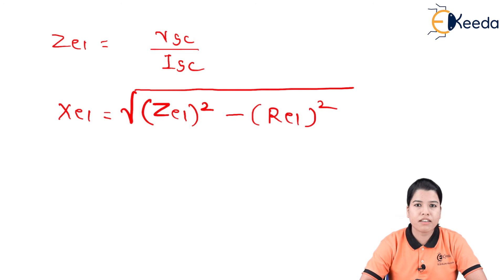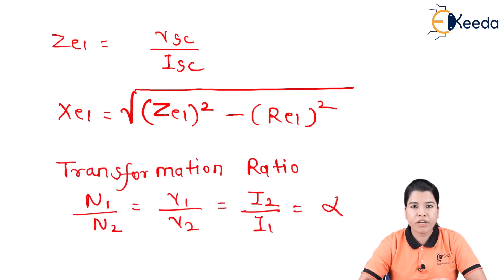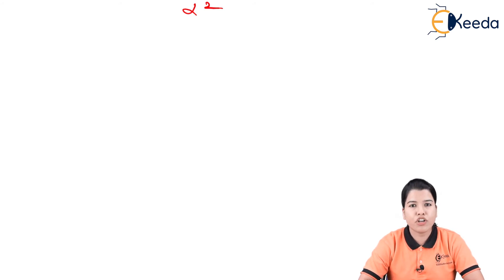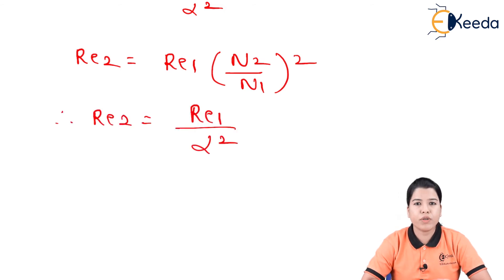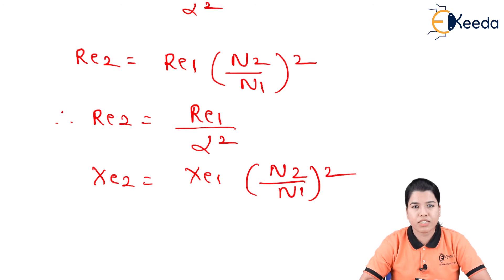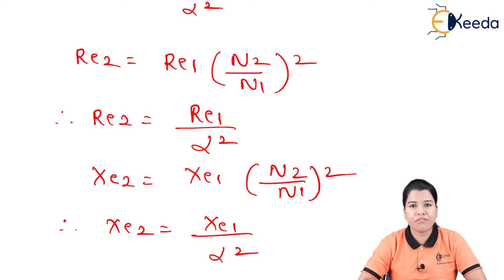To transfer these values referred to the secondary, we use the transformation ratio N1/N2 = V1/V2 = I2/I1 = α. The equivalent impedance referred to secondary is ZE2 = ZE1 · (N2/N1)² = ZE1 / α². Similarly, RE2 = RE1 / α², and XE2 = XE1 / α².